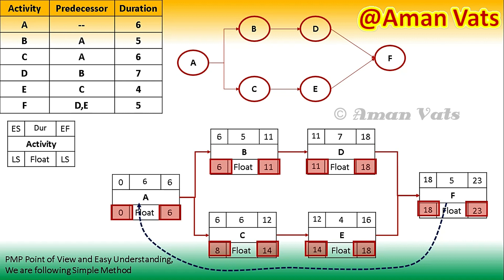Using the backward pass method to calculate late start and late finish: since the early finish is 23, the late finish is also 23 — that remains the same. Now what we do is subtract the activity duration from the late finish to get the late start. So 23 minus 5 equals 18.